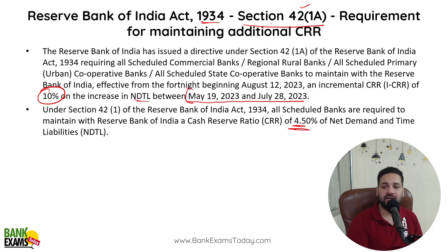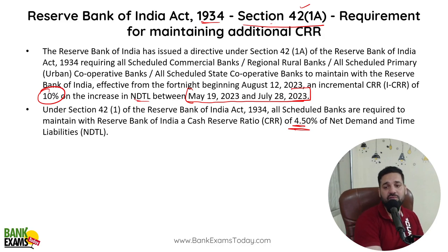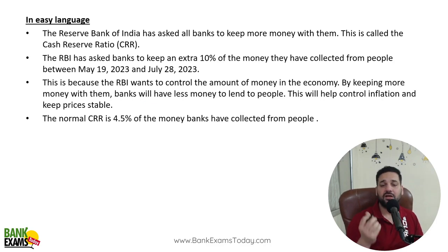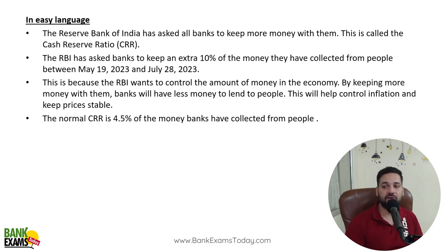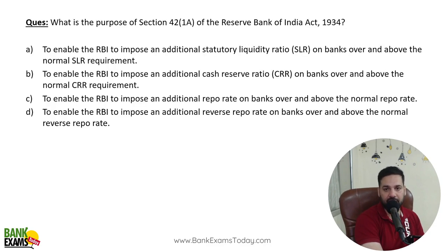From 19th of May to 28th of July — whatever funds banks received during this period — they need to maintain an additional 10% CRR for that period. In simple terms, RBI wants to maintain liquidity in the market and control inflation. Banks will have less money, so they will lend less to people, which will help control inflation and stabilize prices.